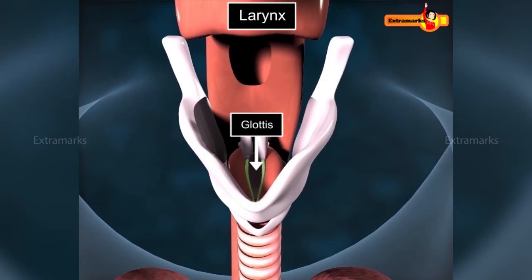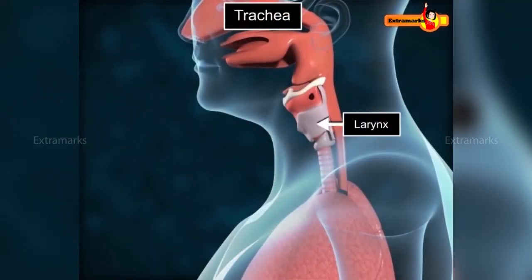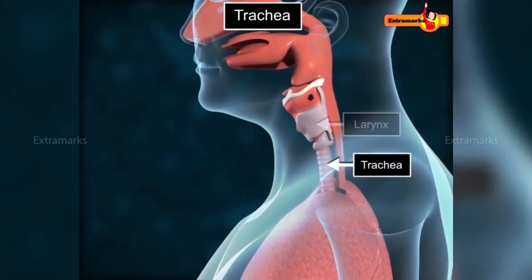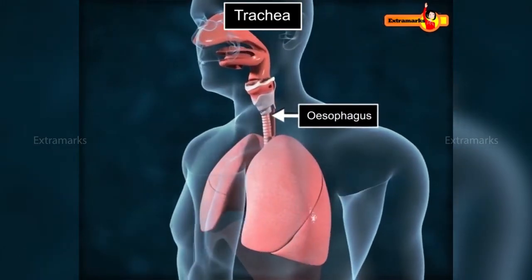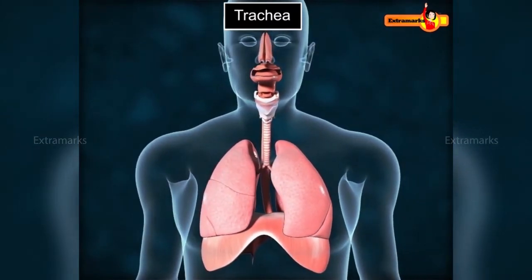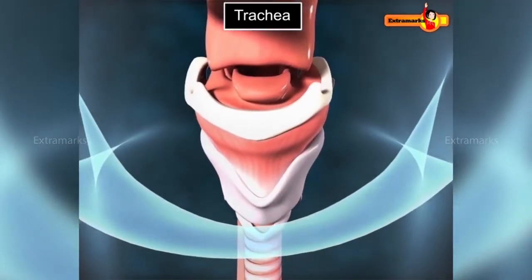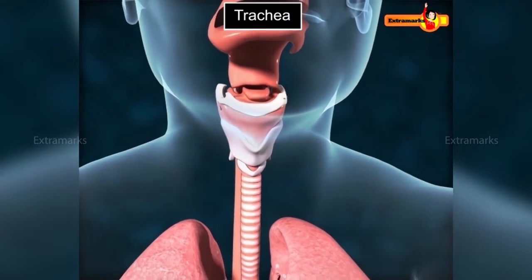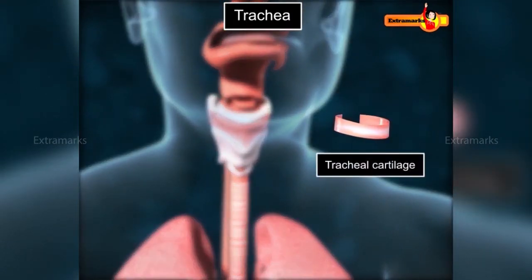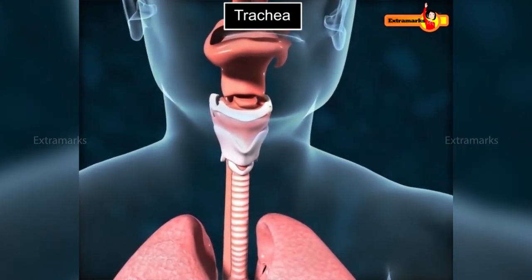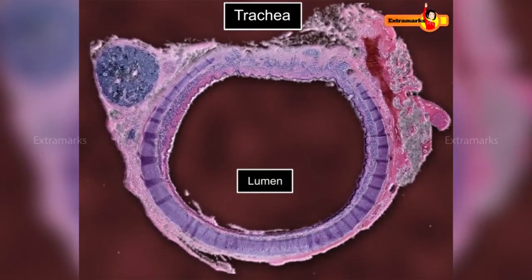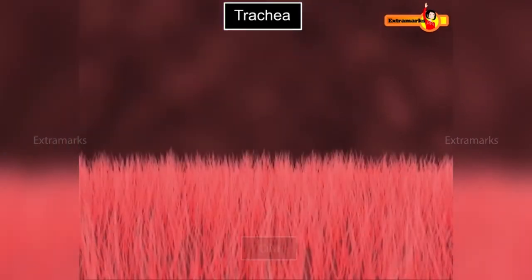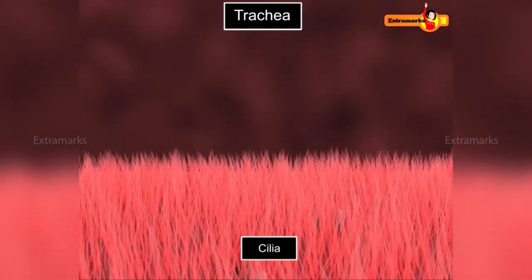The larynx is connected to the lungs by the trachea, which runs through the neck in front of the oesophagus and extends into the thoracic cavity. The walls of the trachea consist of stiff C-shaped cartilage rings that provide flexibility and keep the trachea permanently distended. The lumen of the trachea is lined with ciliated pseudostratified columnar epithelium, and these cilia keep unwanted particles away through beating movements toward the buccal cavity.